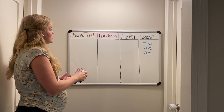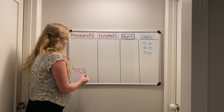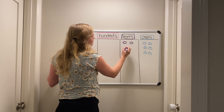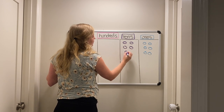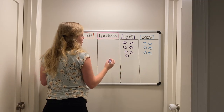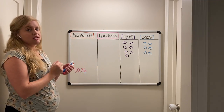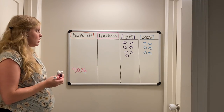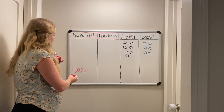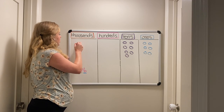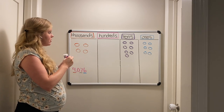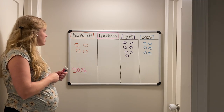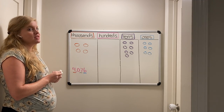We have a seven in the tens place, so we need seven tens. We have a zero in the hundreds place, so we leave that hundreds place alone — no pink bubbles. Then we have a four in the thousands place — four red shapes. So this number represents 4,076.